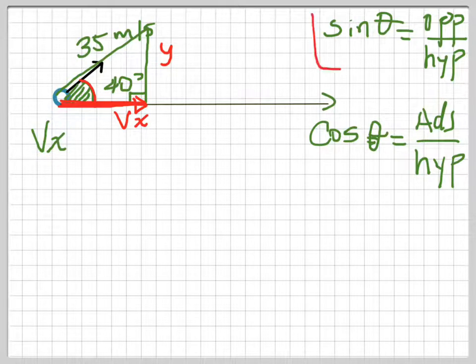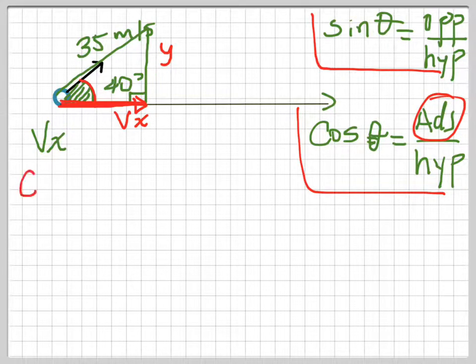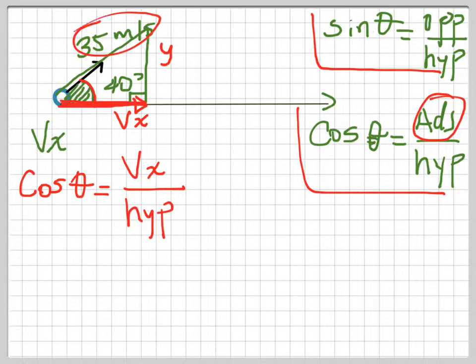Going back to this function—because we're looking for the adjacent—cosine of the angle equals the adjacent (let's call that Vx) divided by the hypotenuse. The hypotenuse is the velocity given at the beginning.